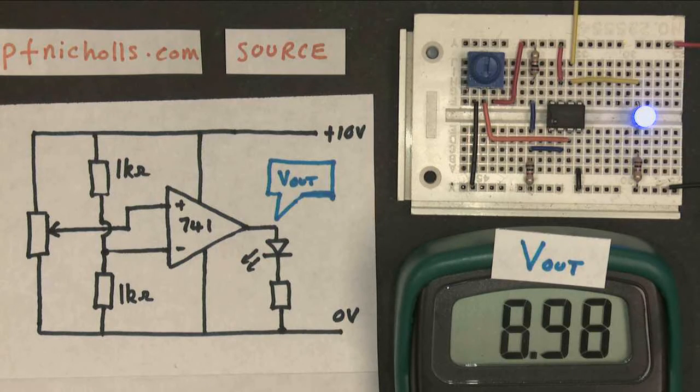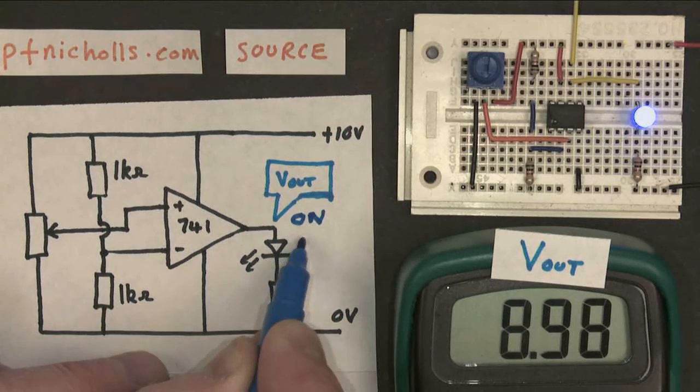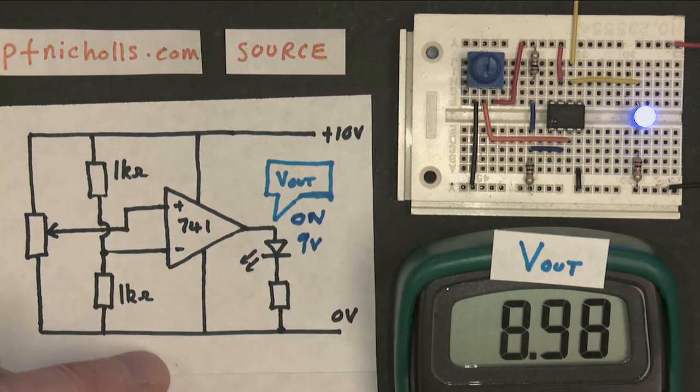And my question is, the thing I'm really interested in is what's happening to the current, what's actually happening here. So when the LED is on, this is 9 volts. So let's have a look at where the current comes from.